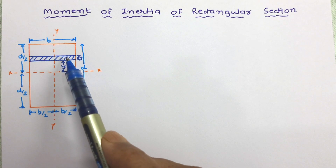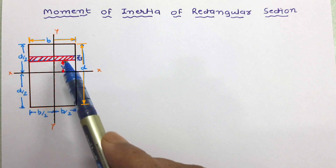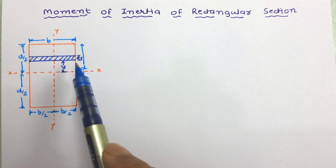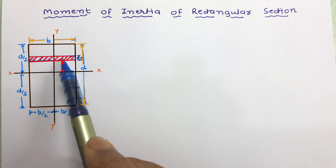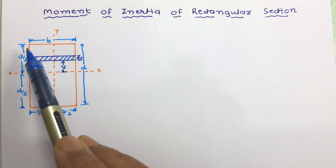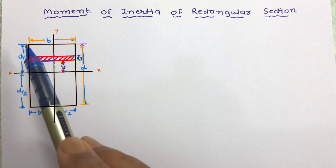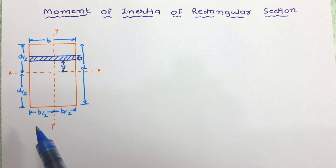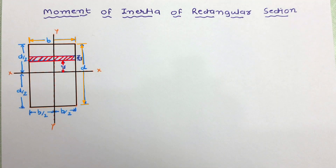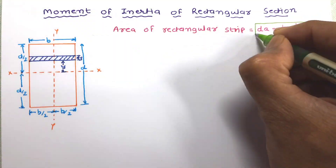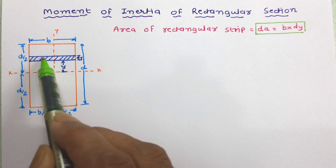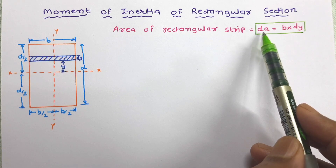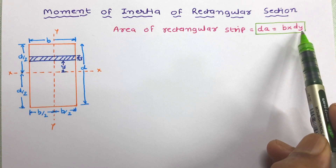We will start with the strip. First of all we will work out the area of the strip. After that we will work out the moment of inertia of the strip about the centroidal axis, then use this to work out the moment of inertia of the complete rectangle by integration. The strip is rectangular so the area is length into width. The length of the strip is b and the width is dy, so the area of the rectangular strip dA equals b times dy.